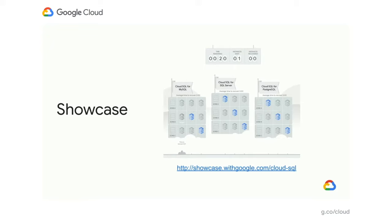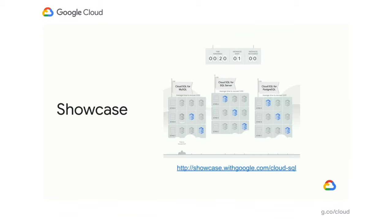To get comfortable with Cloud SQL's high availability configuration, I recommend getting hands-on. You can initiate a failover in the UI or via the API. You can also check out our codelabs — we have one featuring Kubernetes Engine and Cloud SQL that shows how to build a fault-tolerant application, testing fault tolerance in both the application layer and Cloud SQL. And check out our showcase for Google Cloud Next 2020 — a whack-a-mole of databases where you can see Cloud SQL fail and recover, taking down a database in zone A and watching it pop back up in zone B.